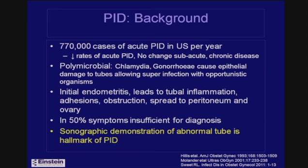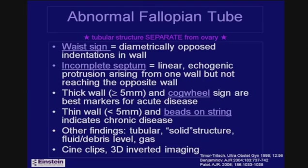If there is spread out of the tube toward the peritoneum, it often involves the ovary. Fewer than 50% of cases are diagnosed by symptoms alone, so people frequently turn to sonography. The hallmark of making the diagnosis is an abnormal fallopian tube. The key is to confirm the abnormal structure is separate from the ovary. Signs include the waist sign with diametrically opposed indentations of the wall, and the incomplete septum sign with a protrusion from one wall not reaching the opposite wall.